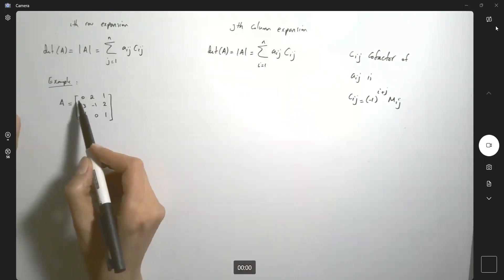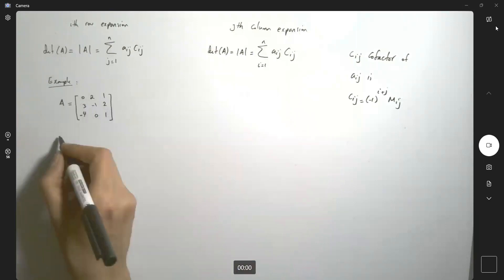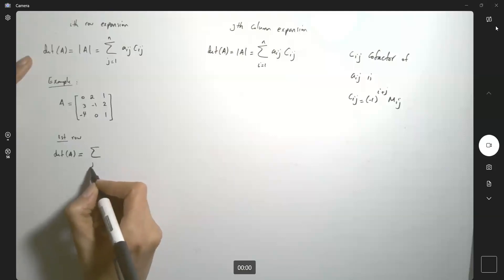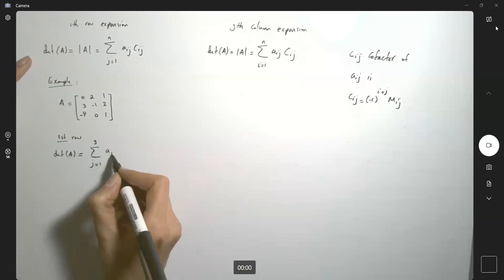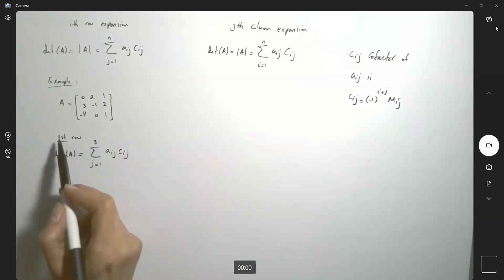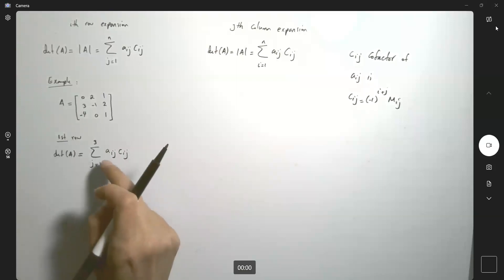Suppose you want to expand it around the first row. In that case, the determinant of A is equal to the sum, j starts from 1, and since it's a 3x3 matrix, goes to 3. Aij times Cij, and your i is fixed. It's going to be 1, so A1j times C1j.